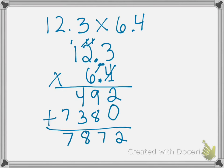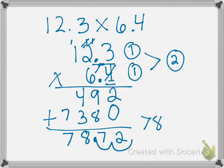Now we're going to move the decimal. We're going to come back up to our factors. In 12 and 3 tenths we have one number after the decimal. And 6 and 4 tenths we have one number after the decimal. So altogether we have two numbers after the decimal. So we come over here to the right of our product and we go 1, 2. So our final answer is 78 and 72 hundredths.